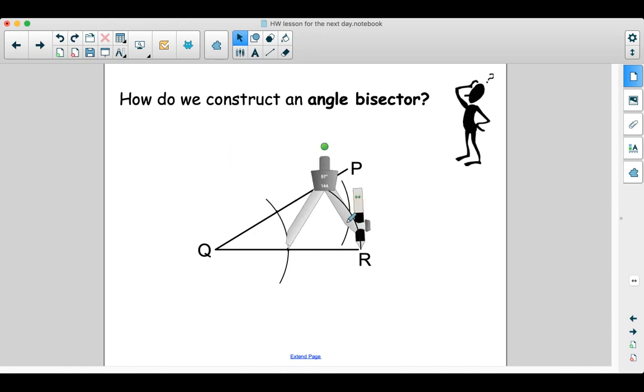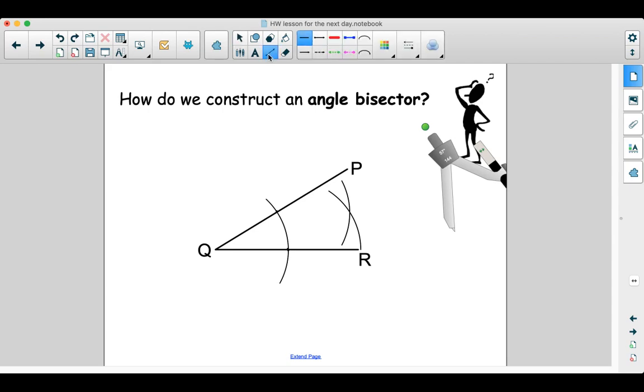And then once again, you make a little curve here. Now we're done. You can put the compass away. And then use a straight edge ruler or whatever you have straight. Connecting the angle Q to our little intersection formed by the two curves. And remember to have an arrow in the end because an angle bisector is a ray.